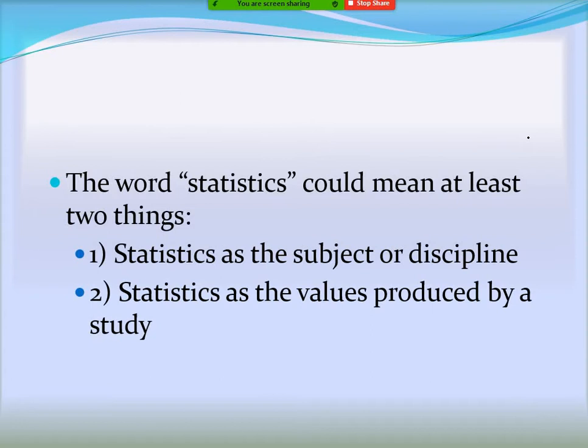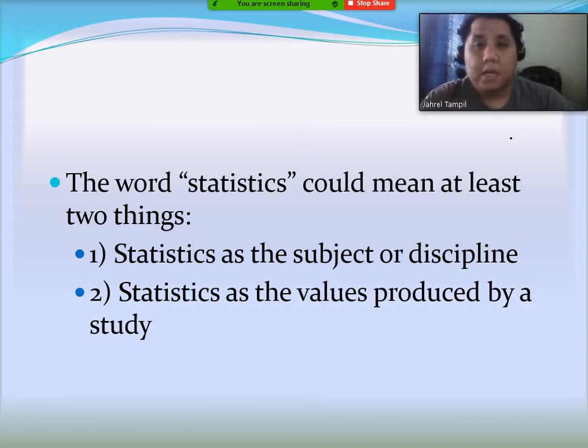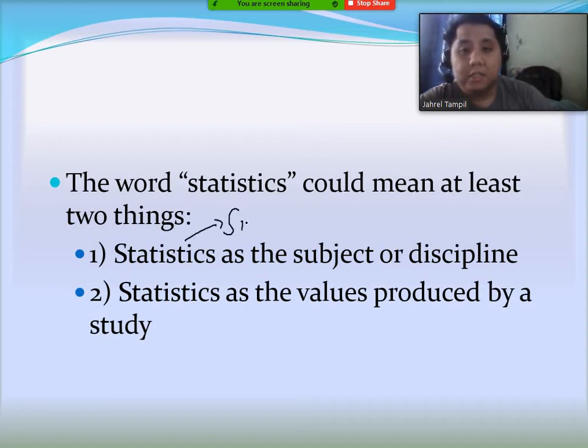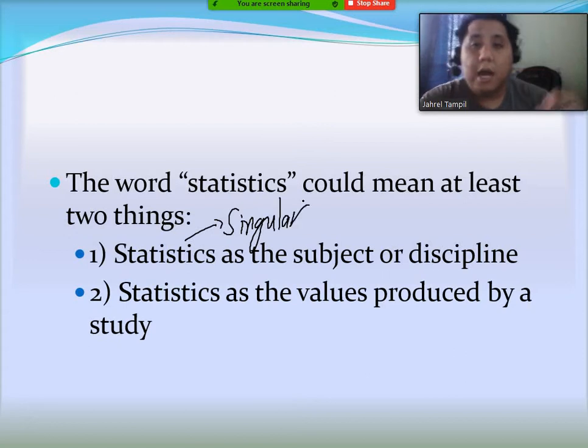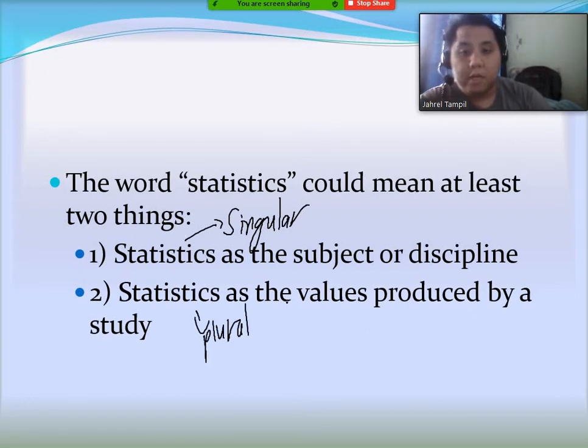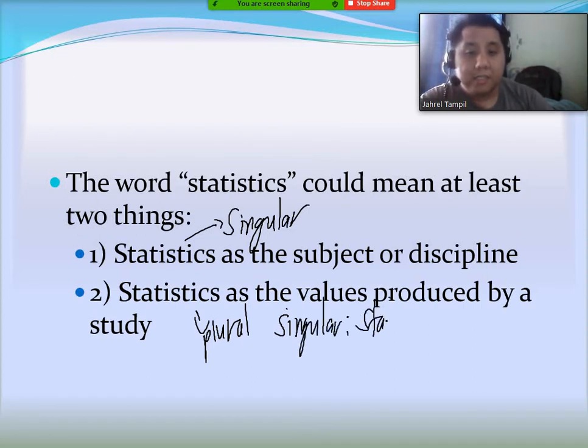The word statistics could mean at least two things. One, statistics as the subject or discipline, or two, statistics as the values produced by a study. It is to note that when we talk of statistics as the study or the discipline, this word is considered singular in nature. However, if we're talking of statistics as the values produced, then this is actually plural, and the singular word is actually a statistic.